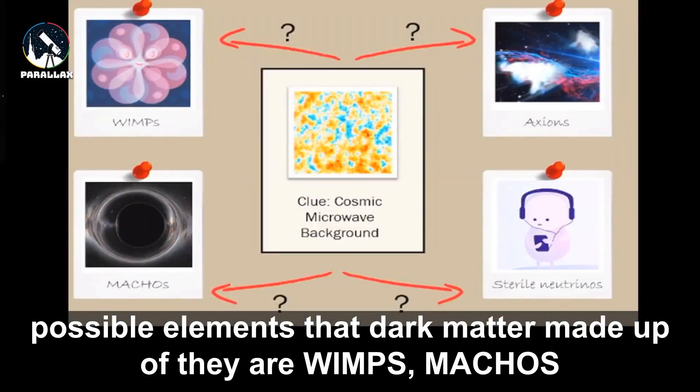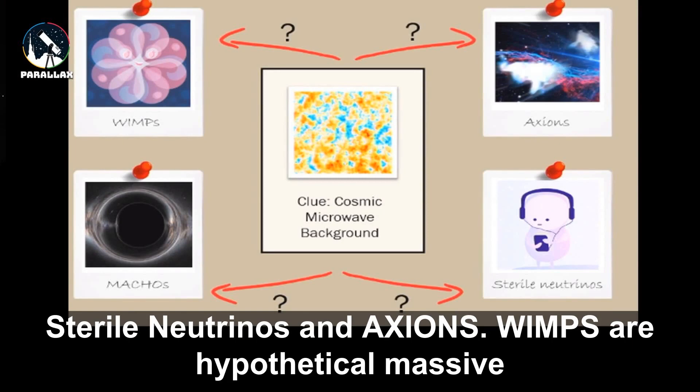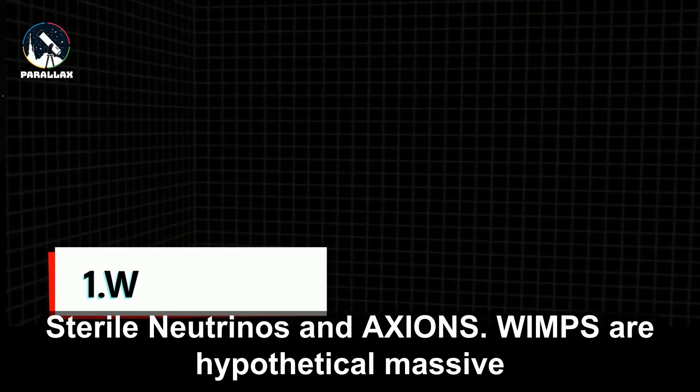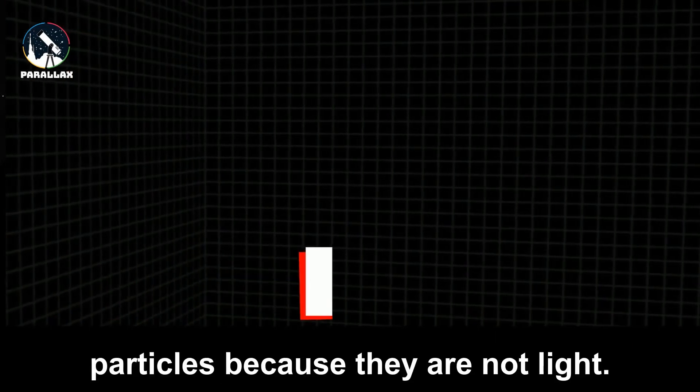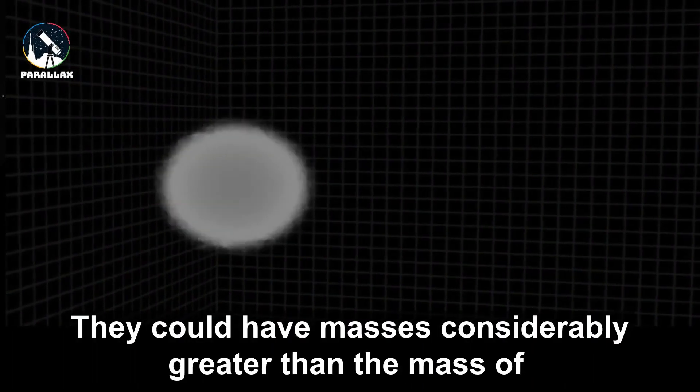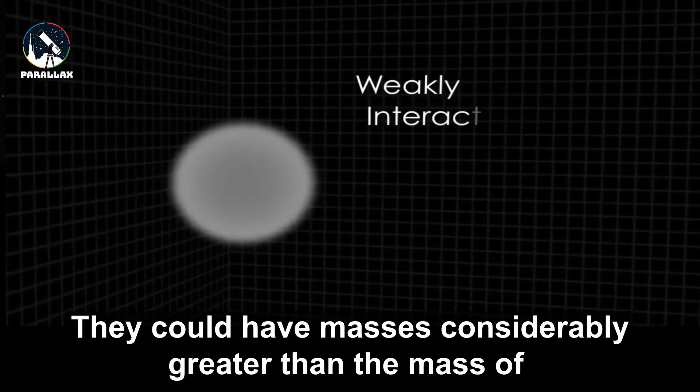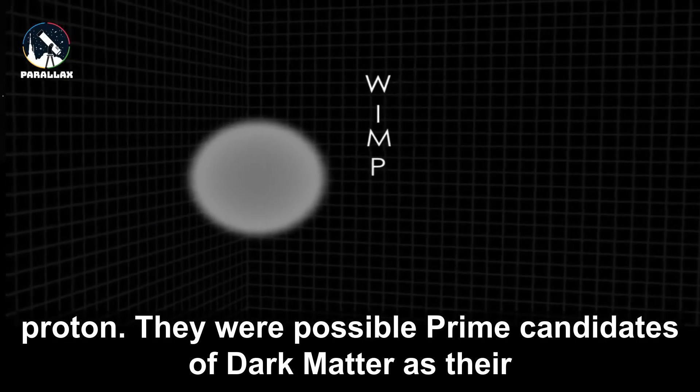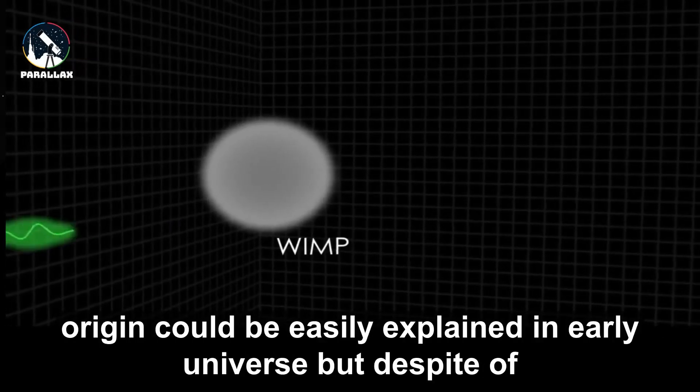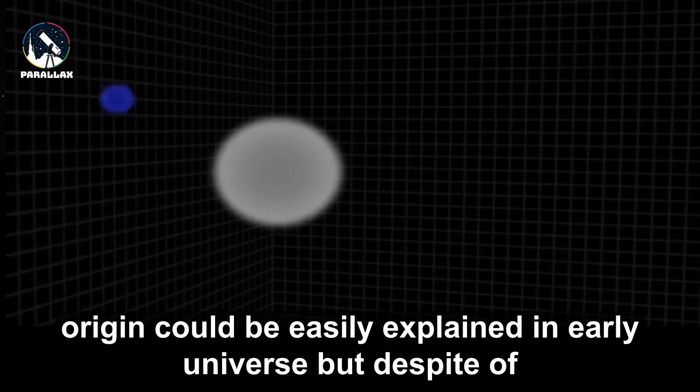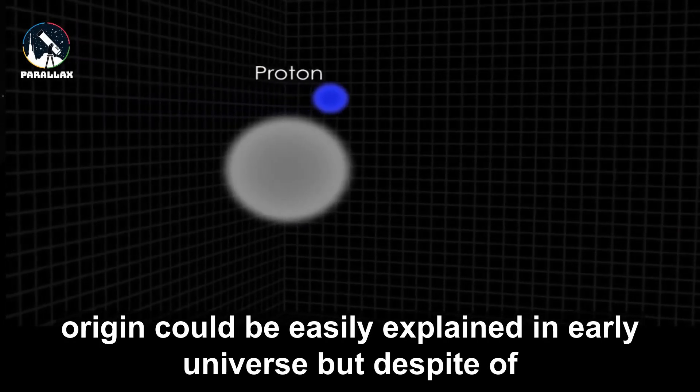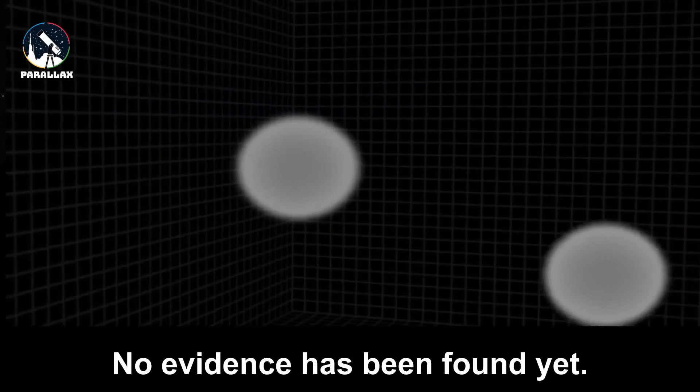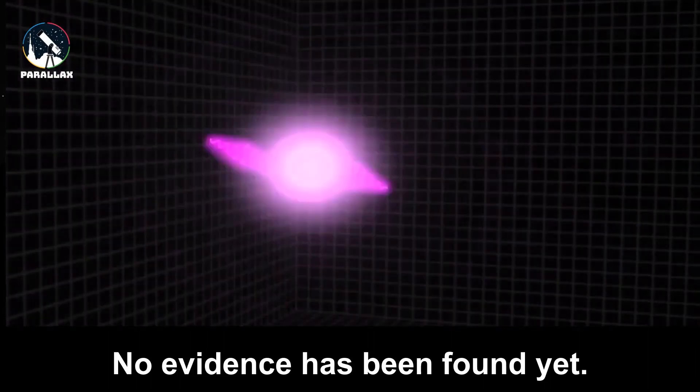They are WIMPs, MACHOs, Sterile Neutrinos, and Axions. WIMPs are hypothetical massive particles because they are not light. They would have masses considerably greater than the mass of a proton. They were possible prime candidates of dark matter as their origin could be easily explained in the early universe. But despite many resources, no evidence has been found yet that they exist.